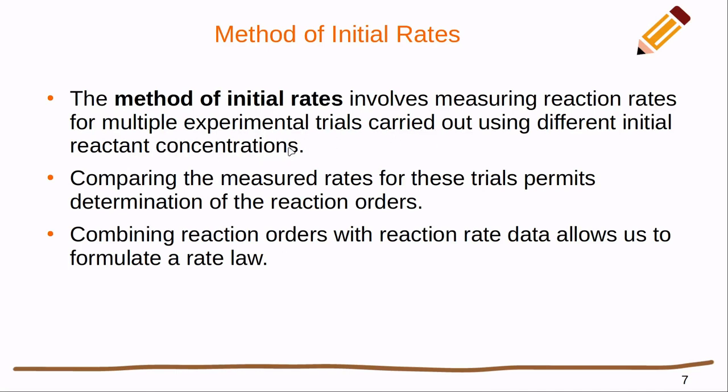And this involves measuring the reaction rates for multiple experimental trials carried out using different initial reaction concentrations. So basically, by being clever about what initial reaction concentrations we use, we can get some clever cancellations and that's going to allow us to be able to solve for the reaction orders.